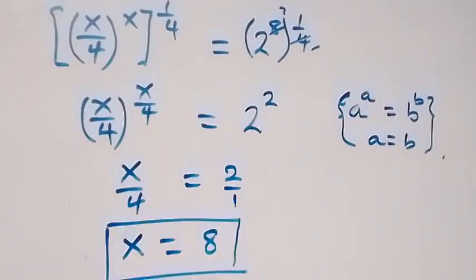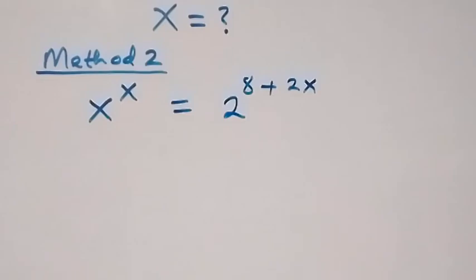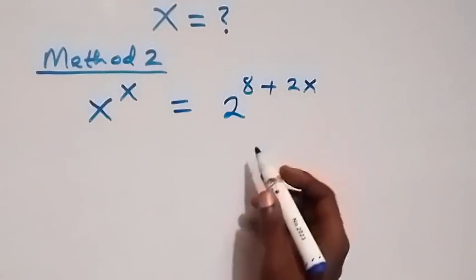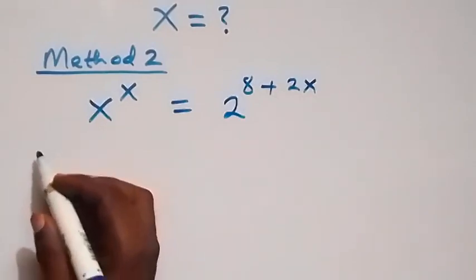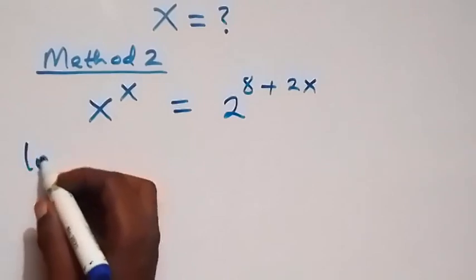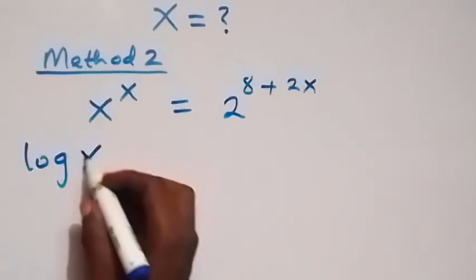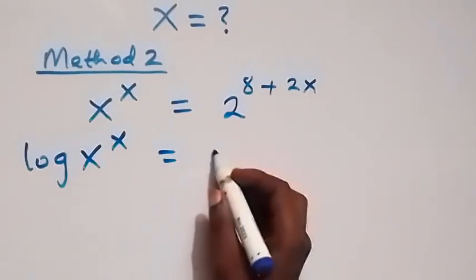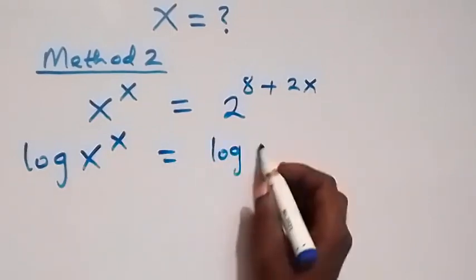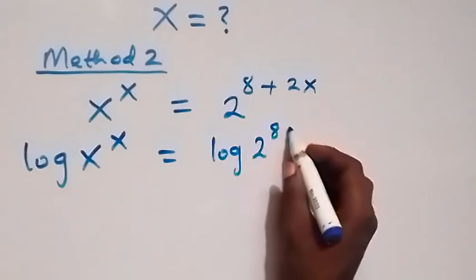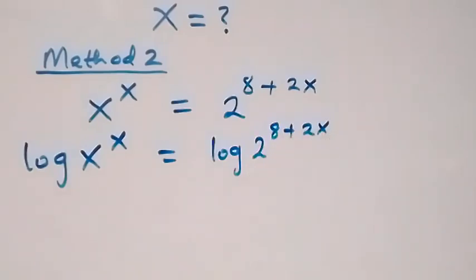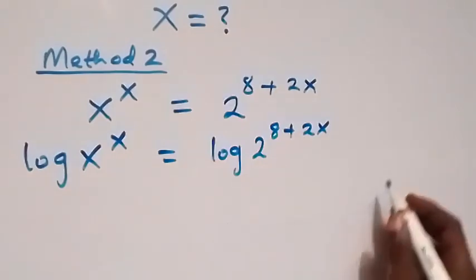Then the second method. From what is given, x raised to power x equals to 2 raised to power 8 plus 2x. Here we can take the log on both sides, and we say log x raised to power x equals to log 2 raised to power 8 plus 2x.